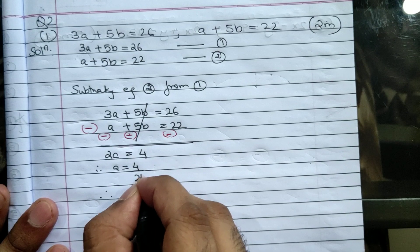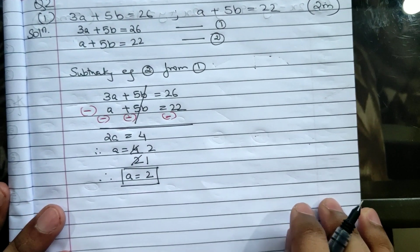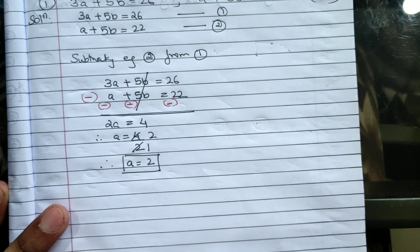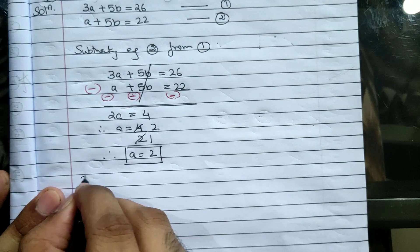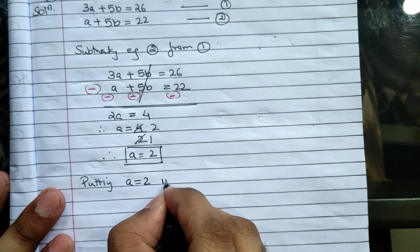Plus 5b minus 5b will get cancelled. 3a minus a gives me 2a. 26 minus 22 gives me 4. Therefore a will be equal to 4 upon 2. Therefore a will be equal to 2.